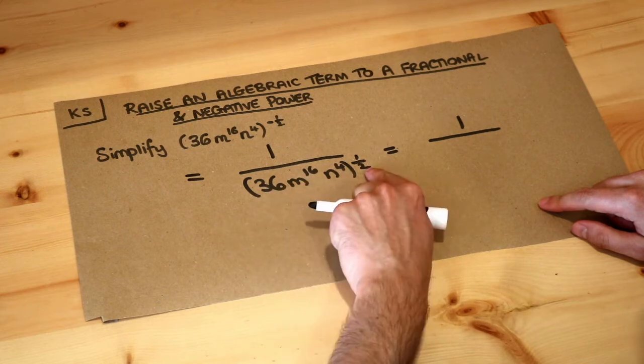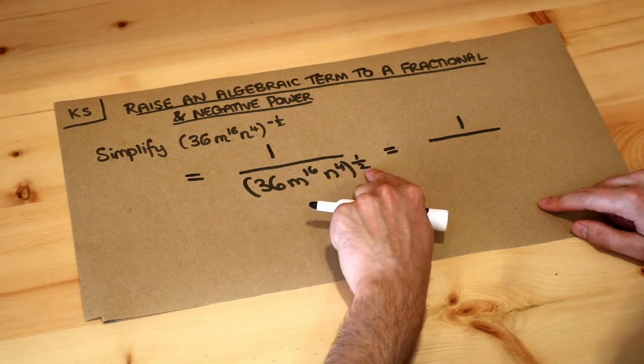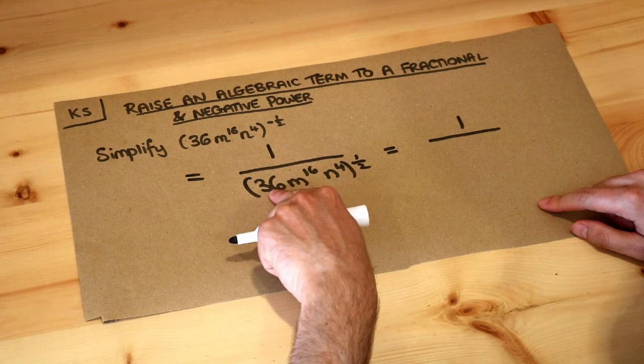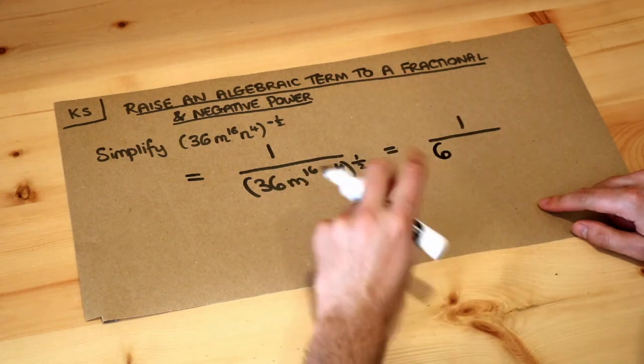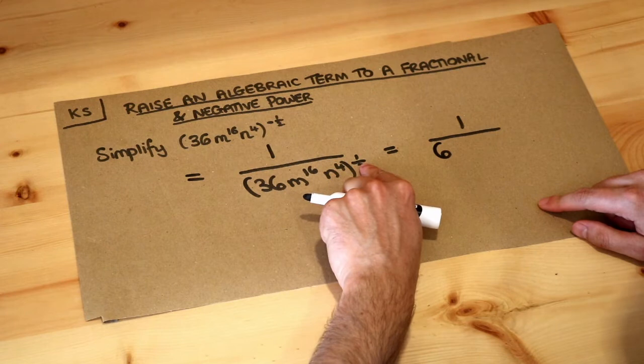So we do 36 to the half. Remember, power of a half just means square root, so 36 square rooted is 6. And then we've got m to the 16 to the half.